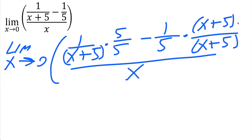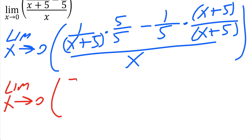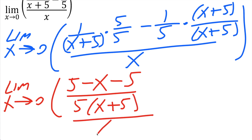The whole thing is divided by x. Our next step is to clean this up — expand it out and get the common denominator. Five times one is just five, and negative one times x plus five gives negative x minus five. The common denominator is five times x plus five, and the whole thing is still divided by x.